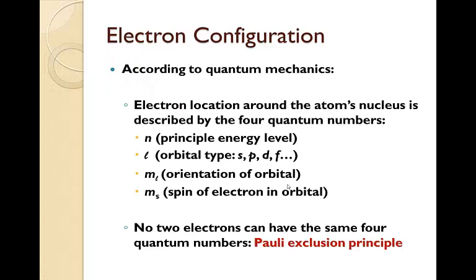According to quantum mechanics, electron location around the atom's nucleus is described by four quantum numbers: n (principle energy level), ℓ (orbital type: s, p, d, or f), mₗ (orientation of orbital), and mₛ (spin of electron in orbital). No two electrons can have the same four quantum numbers. This is called the Pauli exclusion principle.